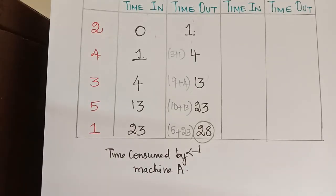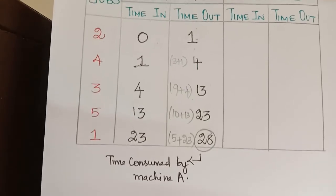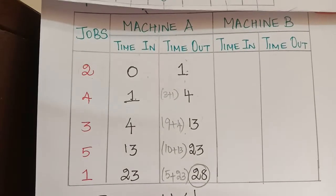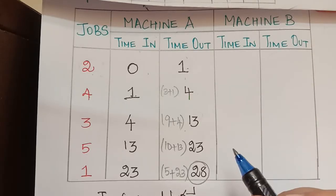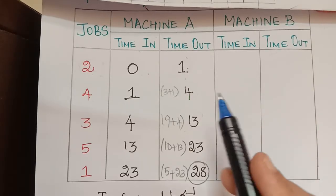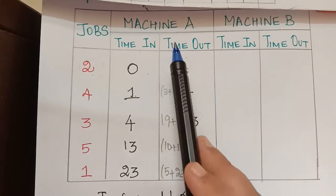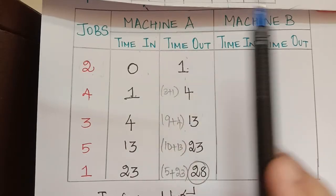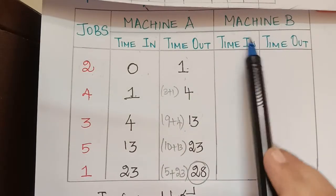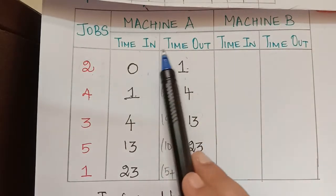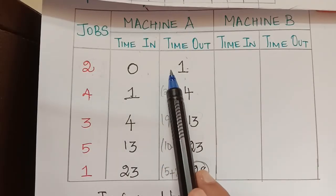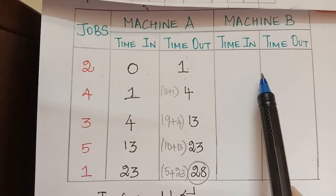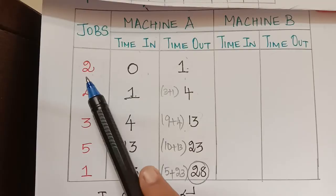Next we calculate the time in and time out for machine B. Listen carefully: all jobs must be performed in machine A first, and only then can they enter machine B. After finishing machine A, a job enters machine B. Always remember that.